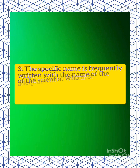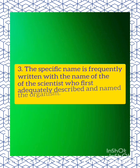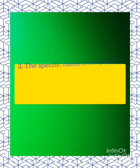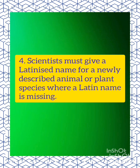Rule number three: the specific name is frequently written with the name of the scientist who first adequately described and named the organism. Rule number four: scientists must give a Latinized name for a newly described animal or plant species where a Latin name is missing.